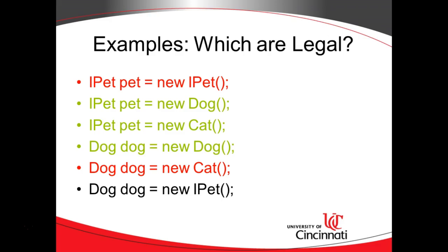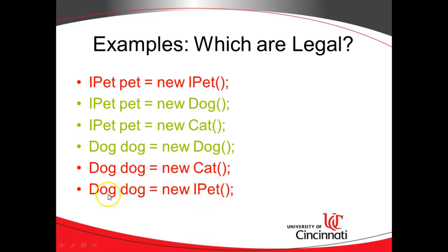It is okay to have methods on the object type that are not on the variable type, but vice versa is not legal. The variable type tells us what methods we're allowed to call; the object type tells us what's going to happen when we call those methods. If the variable type has a method and the object type does not, then we're saying we're allowed to call that method, but the object is not prepared to handle it. The final example — 'Dog dog = new IPet' — is also not legal: we don't call a constructor on an interface, and Dog has a method called bark that IPet does not have, so the object would not know what to do when that method is invoked.